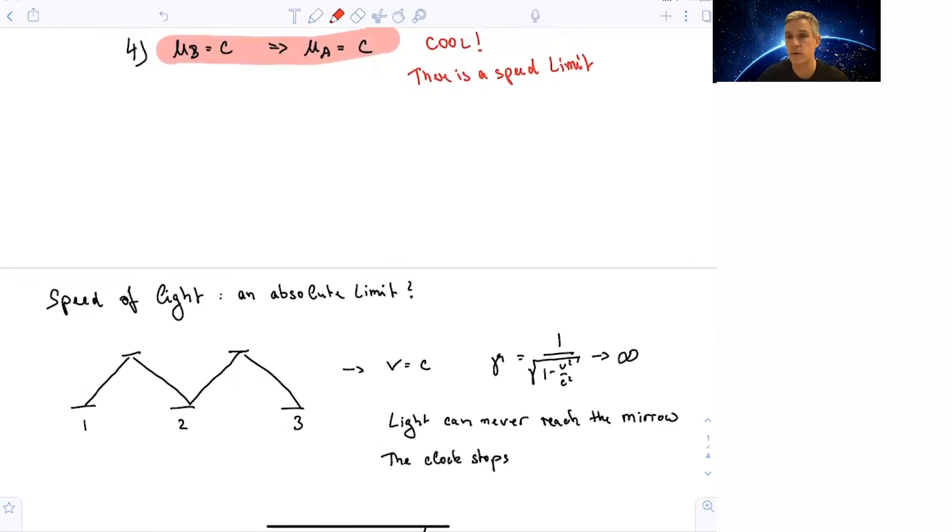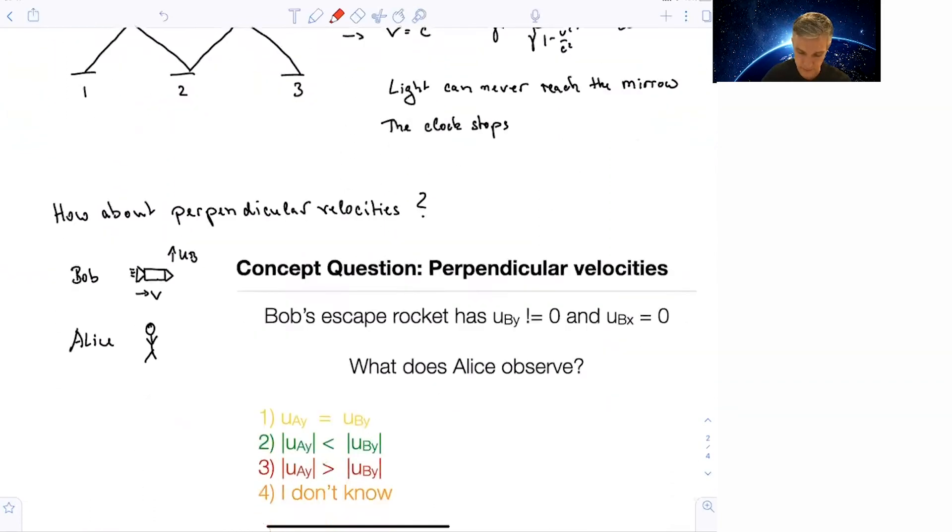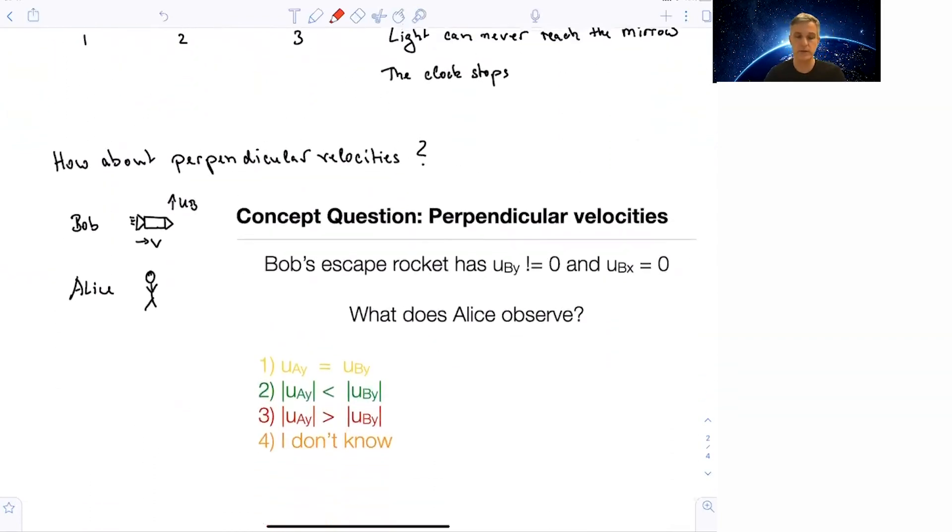So far we discussed only velocities in the direction in which the two reference frames move, or the second reference frame moves with respect to the first one. What now happens if we consider perpendicular velocities? In this case, Bob's spacecraft, the escape rocket goes up. Maybe you're circling the planet, or you're just approaching the planet and you want to probe that planet specifically. Here, we want to work out the example in which the perpendicular velocity is not zero, but the longitudinal velocity is zero. So what does Alice observe?